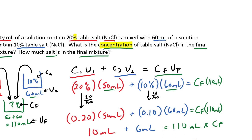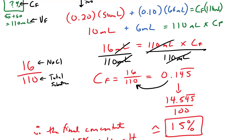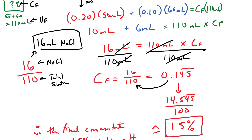I also asked how much salt is in the final mixture. From the calculation, we had 16 ml on top and 110 ml total solution on the bottom — the 16 ml represents my sodium chloride. Therefore, there are 16 milliliters of sodium chloride in a final solution of 110 ml. Sodium chloride is a solid; normally we don't talk about solids in milliliters, but if we have the density we can convert between grams and milliliters — the topic of a future lecture.